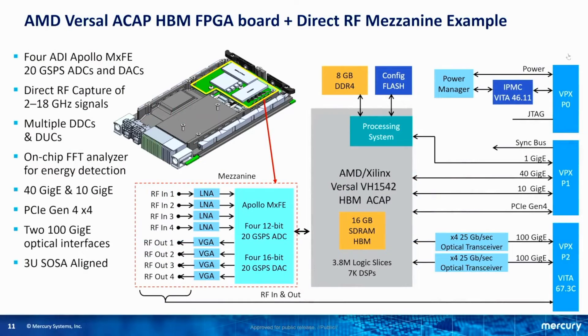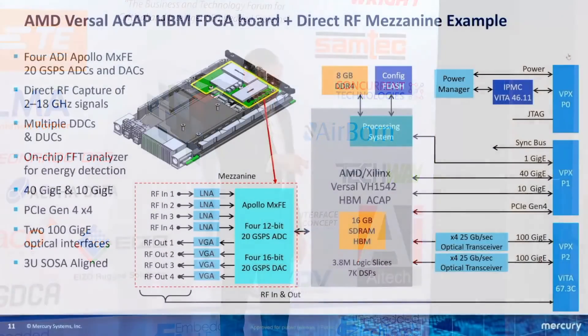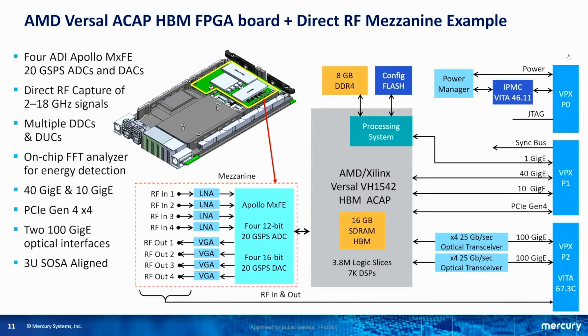Another Versal family variant features high bandwidth memory, which provides tremendous memory bandwidth because the memory is embedded right in the FPGA itself. This is very valuable for compute-intensive applications requiring extremely high memory bandwidth. In this case, we have a mezzanine card construct for the product. The first mezzanine product will be based on the new Analog Devices Apollo family — the MX-FE — giving us four channels of 20 gigasample-per-second input and 20 gigasample-per-second D-to-A output as a mezzanine card.